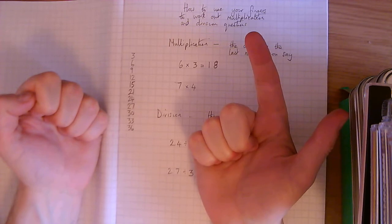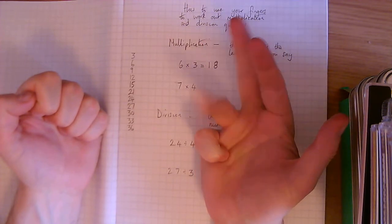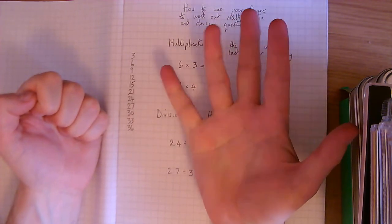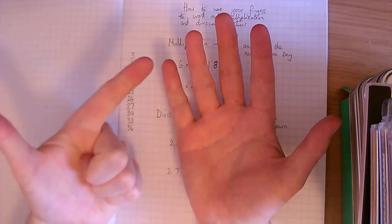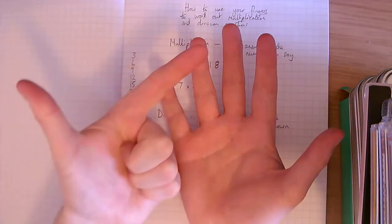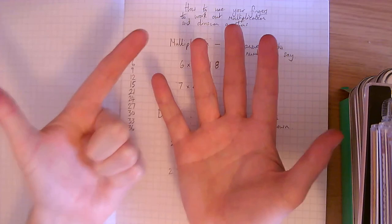4, 8, 12, 16, 20, 24, 28. So I've got to my 7th digit and so the answer is 28.